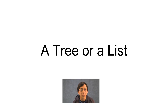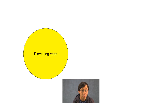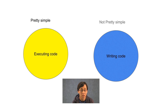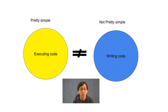Before we move on, let me tell you something about the two kinds of questions on this test. There are questions about executing code and questions about writing code. All things considered, executing code is pretty simple. Writing code is just not pretty simple. What I'm saying is that these upcoming questions are probably fundamentally more difficult than the ones that we've just done.